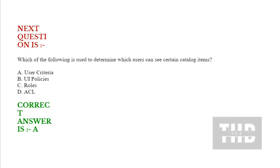Which of the following is used to determine which users can see certain catalog items? Option A: User criteria. Option B: UI policies. Option C: Roles. Option D: ACL. Correct answer is Option A.